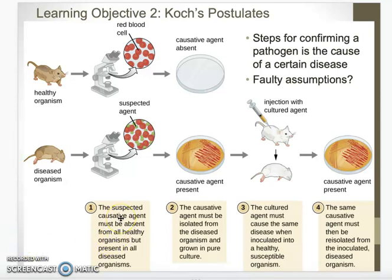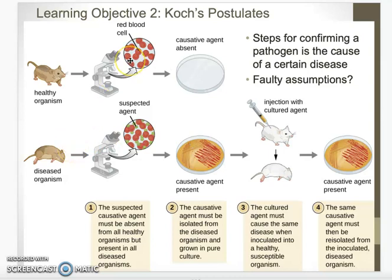Step one: the suspected causative agent — the microbe we think is causing the disease — is absent in healthy organisms, but it's present in all of the sick ones. Step two: you can isolate it from the host and grow it in pure culture in a lab. A pure culture means you're growing just a bunch of that one thing. So you can find it in diseased organisms but not healthy organisms, and you can isolate it and grow it in pure culture from the diseased organisms.